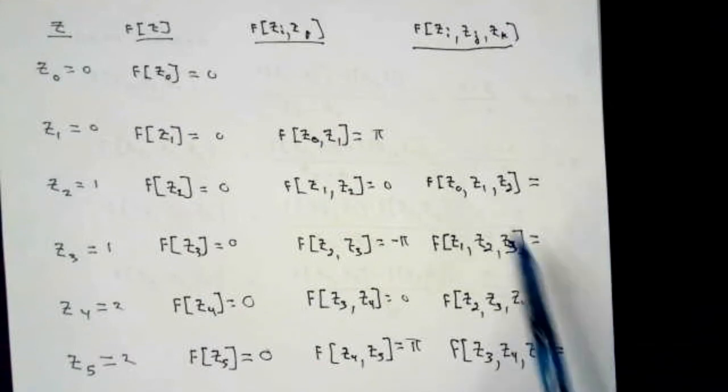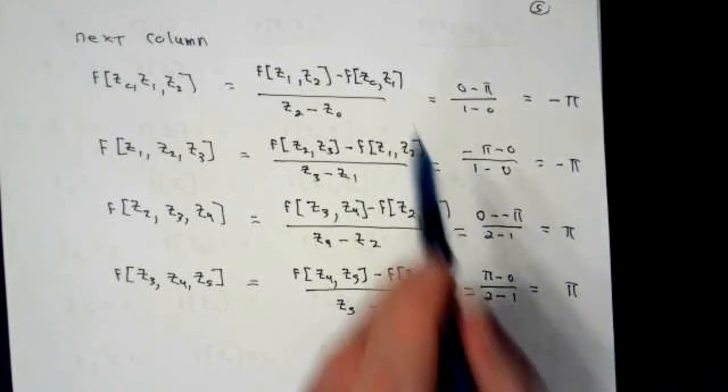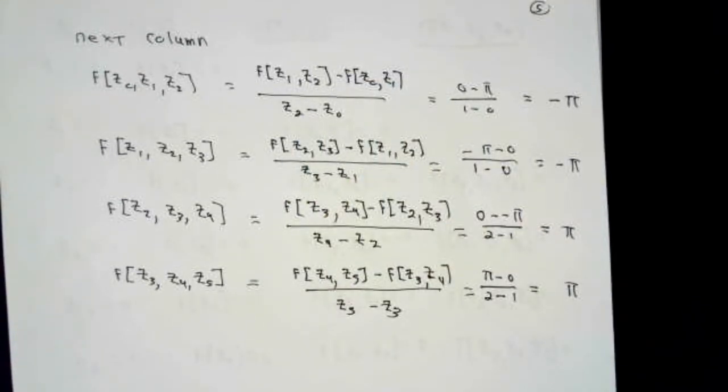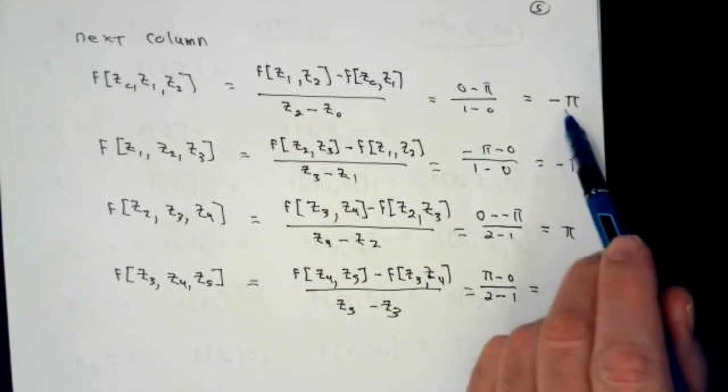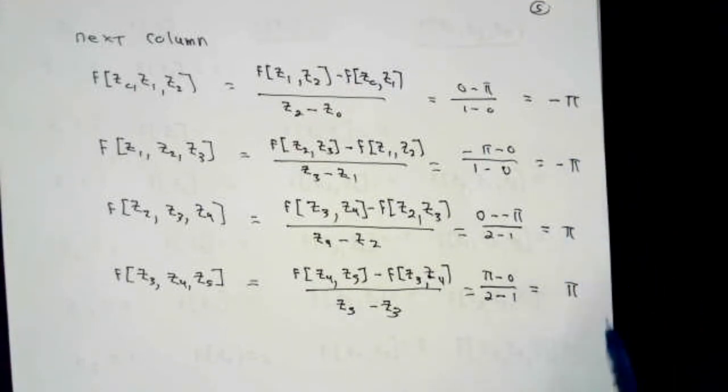The next thing I have to do is to calculate these quantities in column k equal 2. But as we said, we're just going to use the usual recursion formula. Not to belabor the point, do the usual recursion relation, the details of which I specified here. The numbers that go in the next column are going to be negative π, negative π, π, and π.